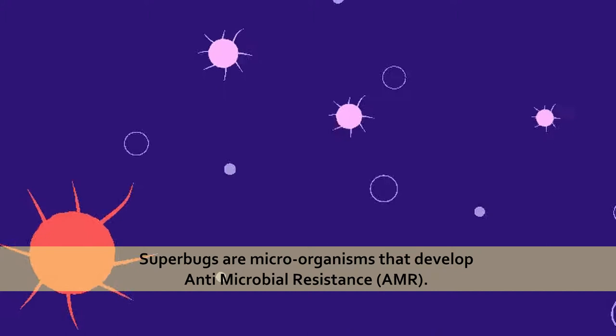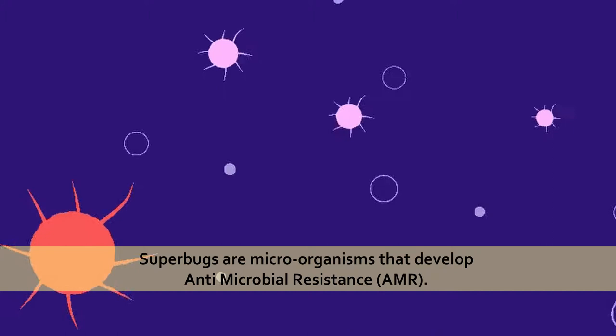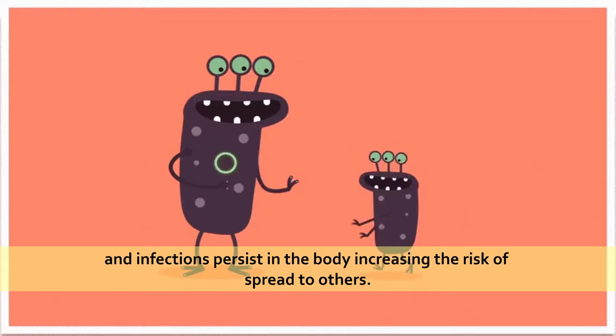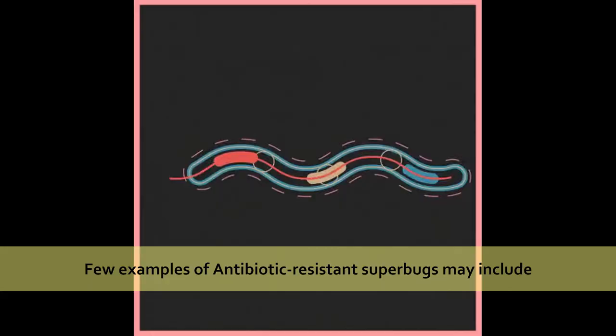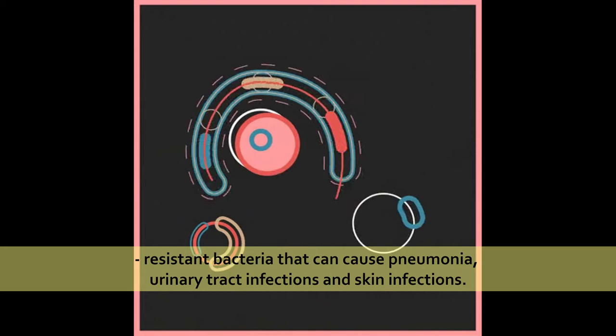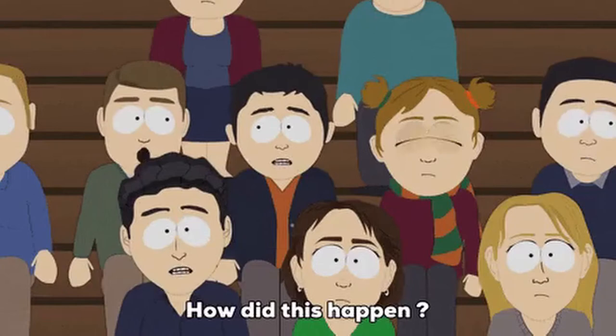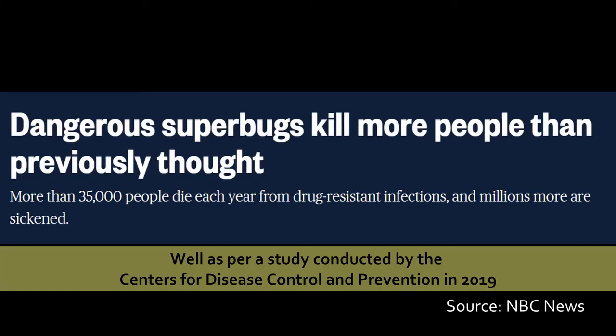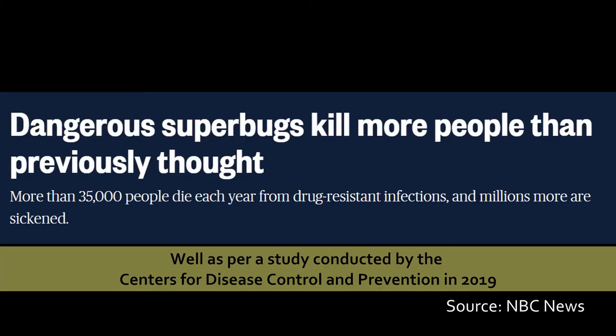Now let us understand what are superbugs. Superbugs are microorganisms that develop antimicrobial resistance. As a result, medicines become ineffective and infections persist in the body, increasing the risk of spread to others. A few examples of antibiotic-resistant superbugs include resistant bacteria that can cause pneumonia, urinary tract infections, and skin infections.